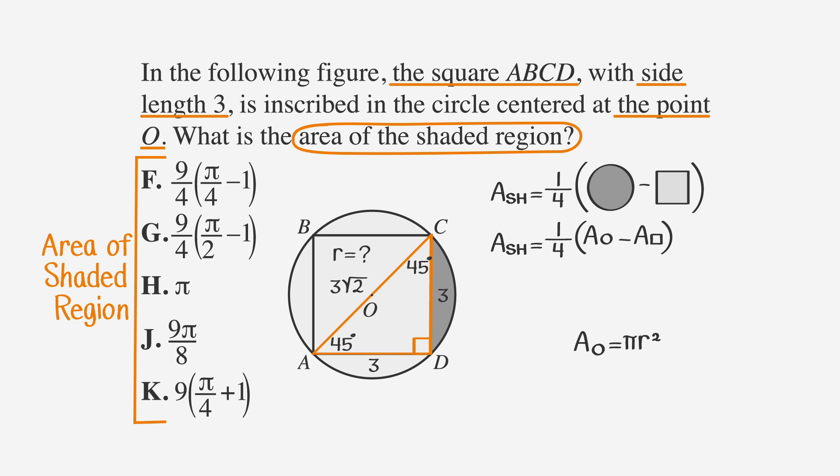The radius is half of that, or 3 times the square root of 2 over 2. Using the formula for area of a circle, pi r squared, we can substitute 3 times the square root of 2 over 2 in for the radius. Square it, and we find out that the area of our circle is 9 pi over 2.